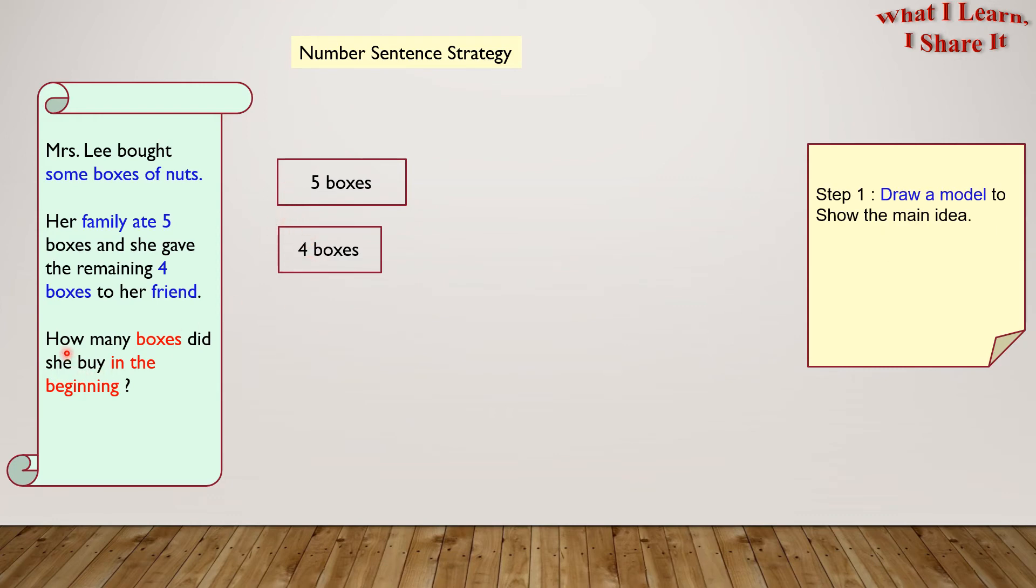So since we have to find how many boxes she bought in the beginning, let's combine these two rectangles, which look like this. So these two rectangles make the total boxes.